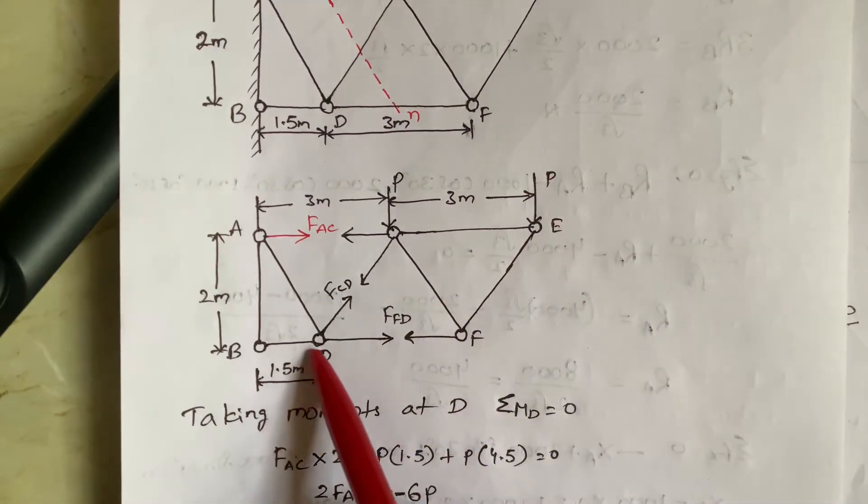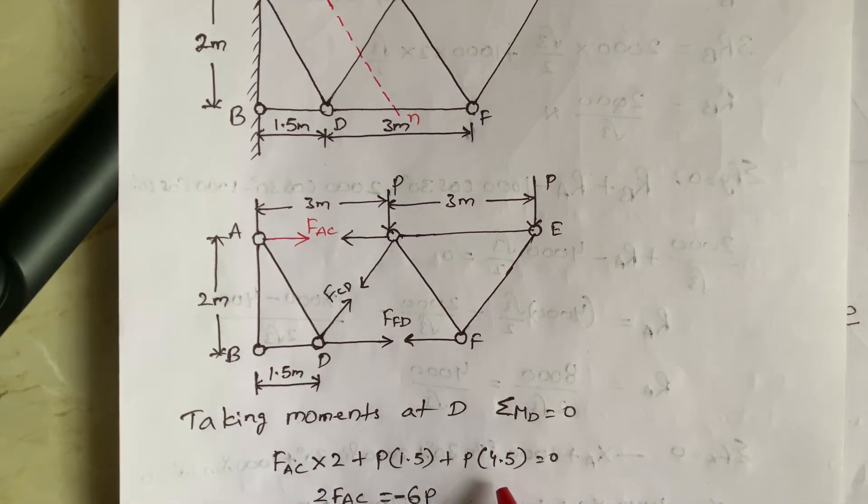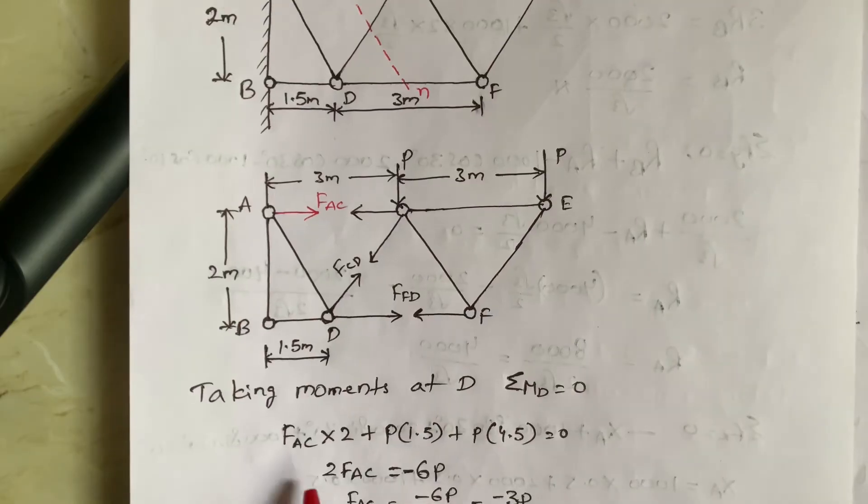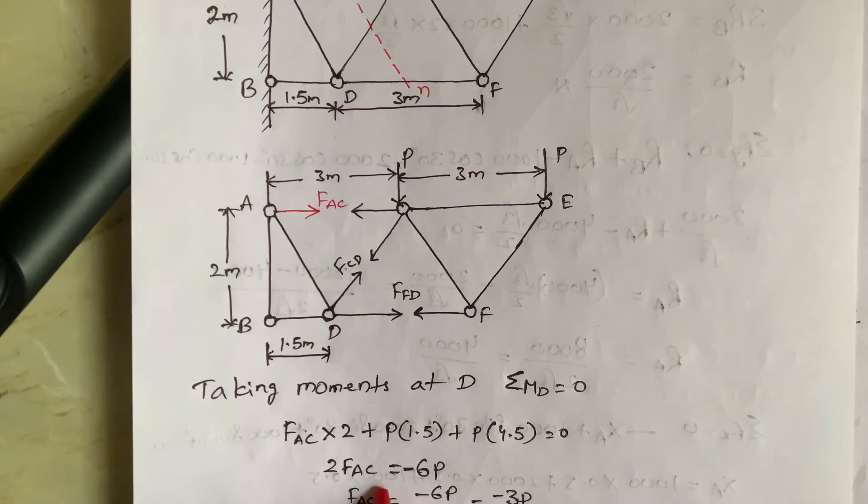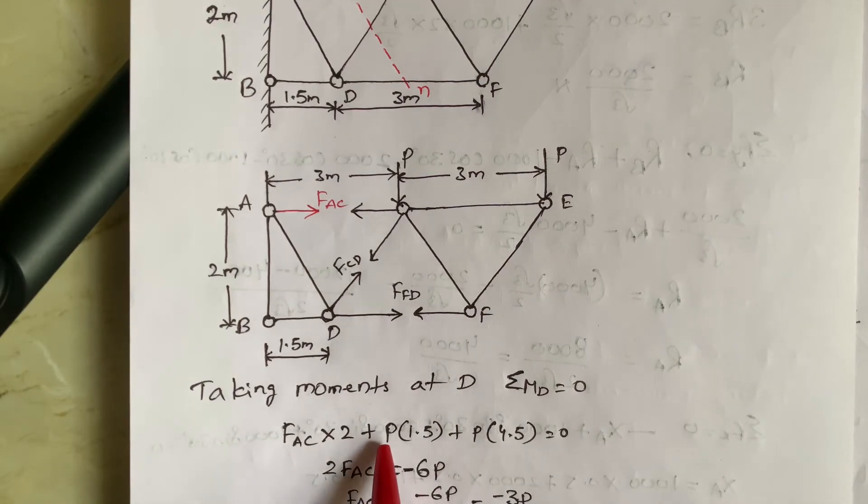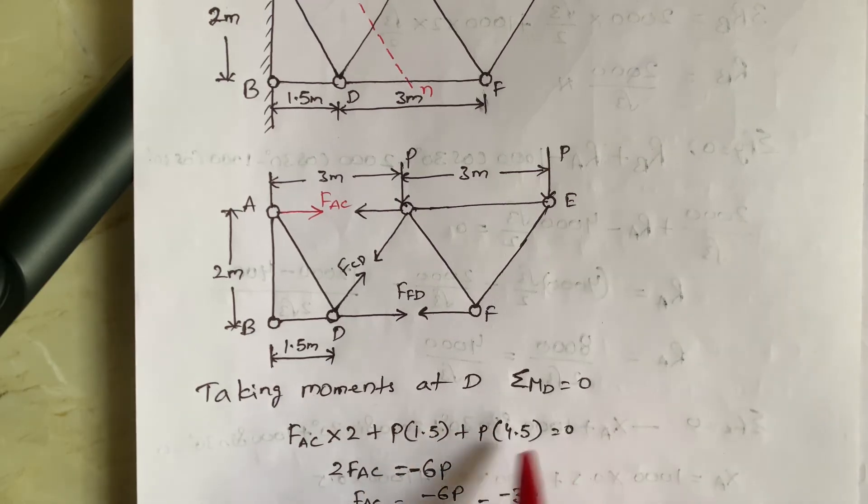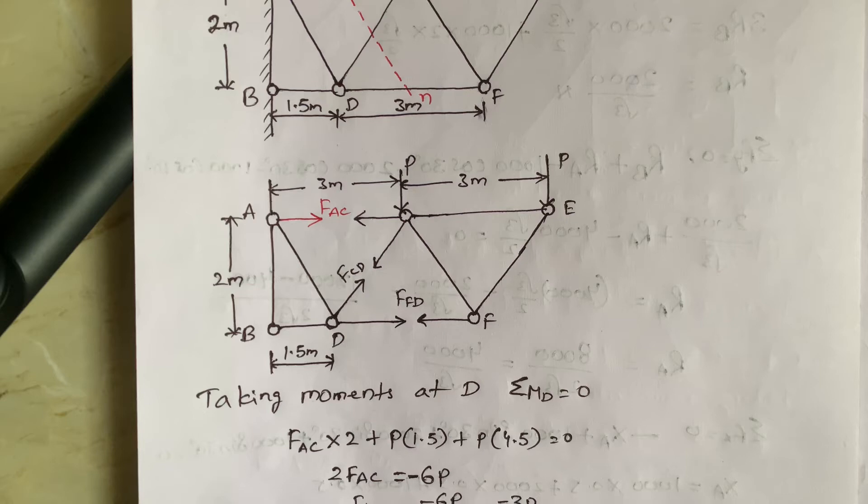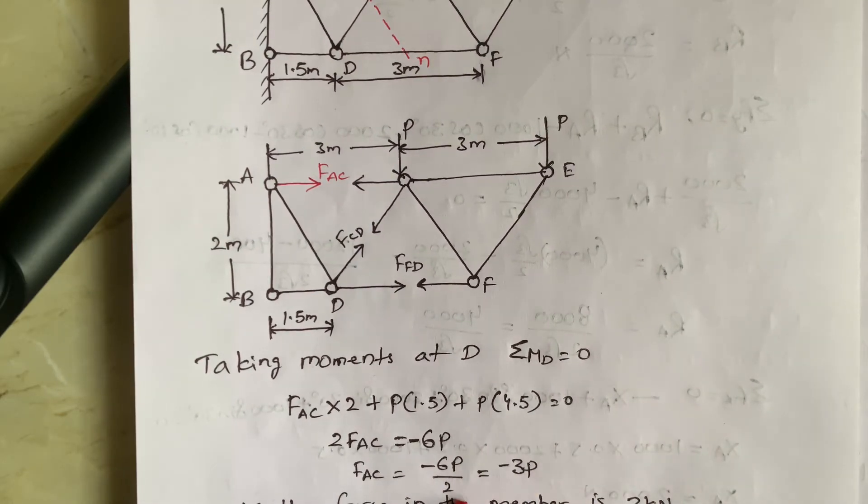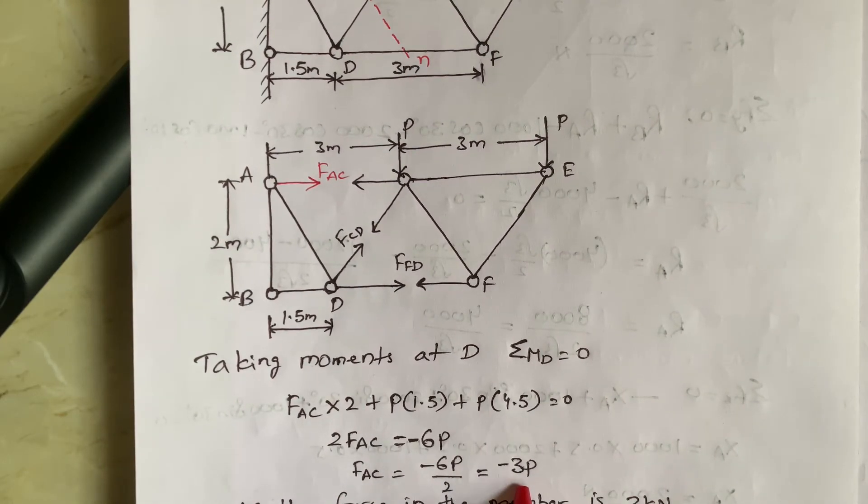So force into perpendicular distance is 4.5. So after solving this, 2FAC equal to, I am considering this equation. I am sending this equation to right hand side. So minus 6P. So FAC equal to minus 6P by 2. That is minus 3P.